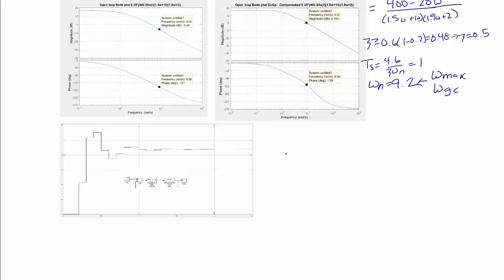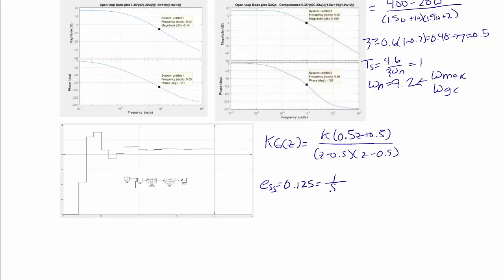Next we're going to use the steady state error to find k. Note that kG(z) is equal to k times 0.5 z plus 0.5 over z minus 0.5 times z minus 0.9. Since we had an error of 12.5%, that is 0.125, or 1 over 8, which equals 1 over 1 plus kp.